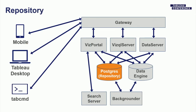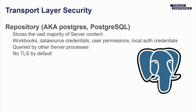Next is the repository. In our architectural diagram, the repository has a different role than the gateway — it does not receive client requests directly; all requests still go to the gateway. However, requests from the gateway to backend services may relate to the repository when processes need to query the database. The repository is a Postgres database, and Tableau Server stores the vast majority of your user content there — your workbooks, data source credentials, metadata, permissions on projects. If you use local authentication, usernames and hashed passwords are also in here.